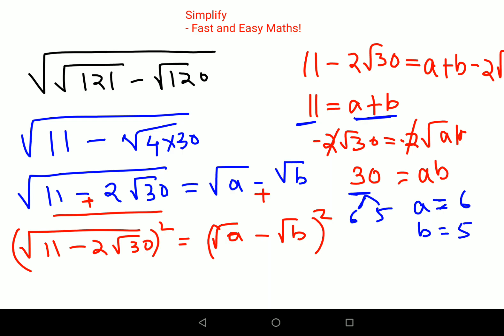You might be wondering why I didn't take a as 5 and b as 6, but here there's a minus sign involved. So the final answer is √6 - √5. I hope I've made myself clear. For these kinds of questions, use this particular equation—I'll highlight it—and the answer becomes very easy to solve.